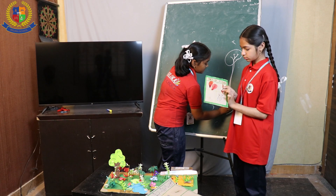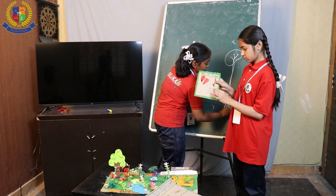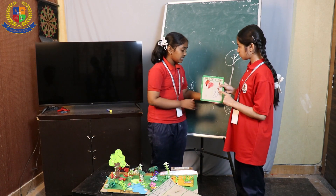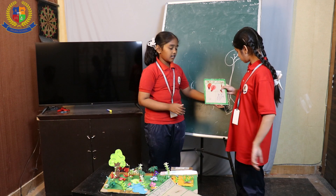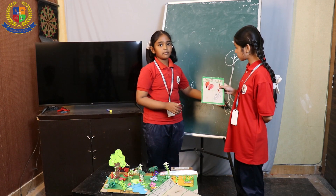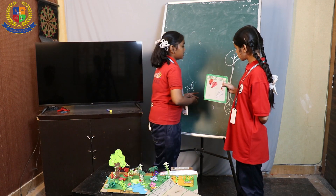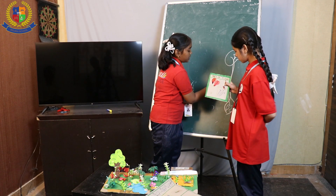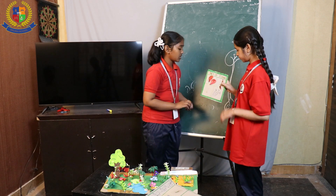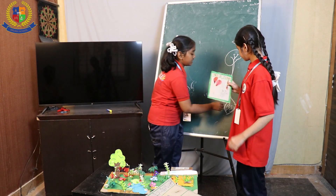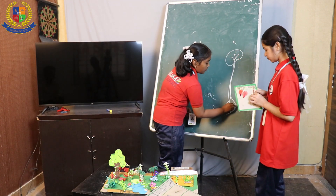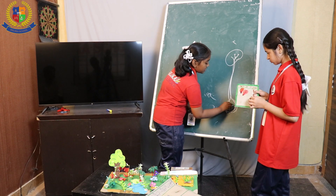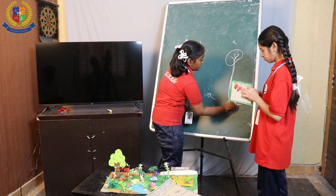Inside the ovary there will be some egg-like structures called ovules. If they are unfertilised they will become seeds, and if they are fertilised they can become a fruit. The ovary is the outer part of the ovules, and the ovules are the egg-like parts.